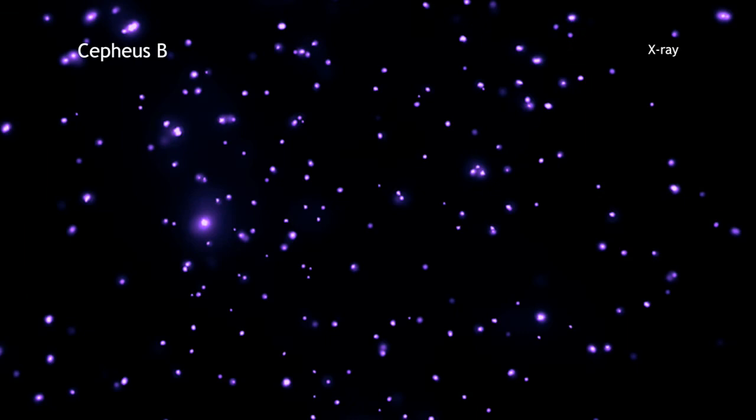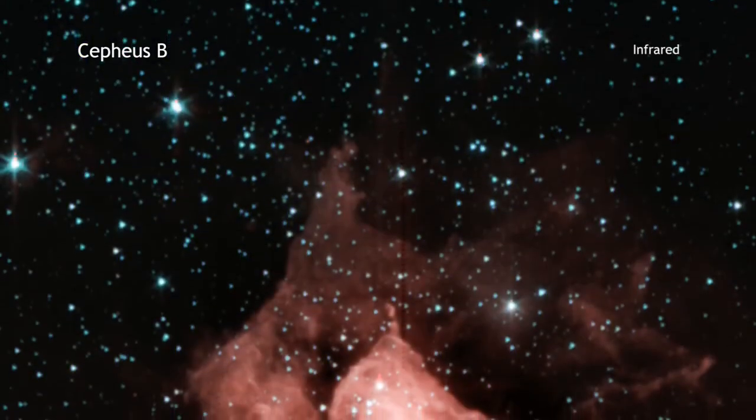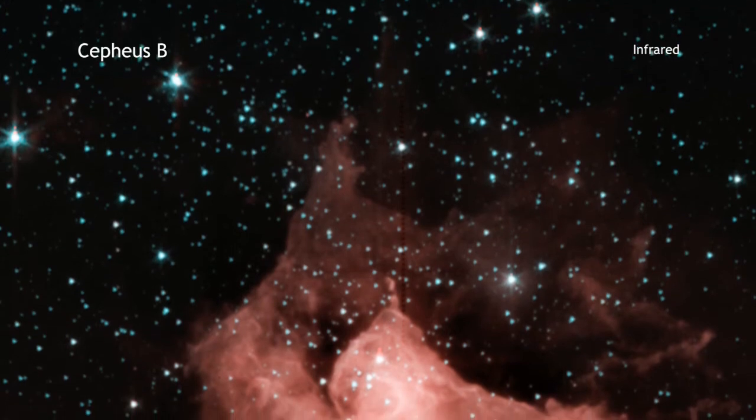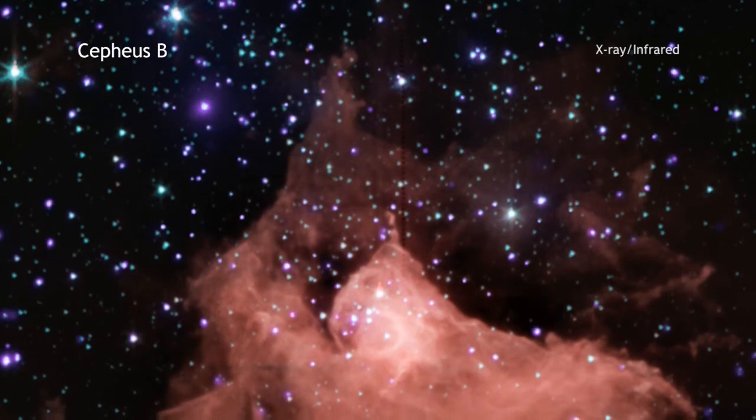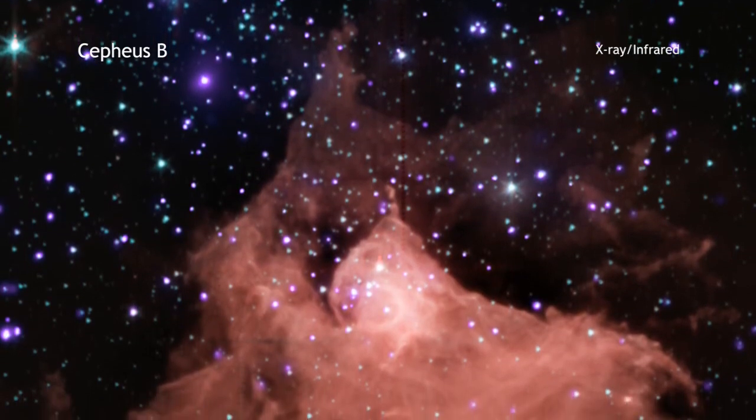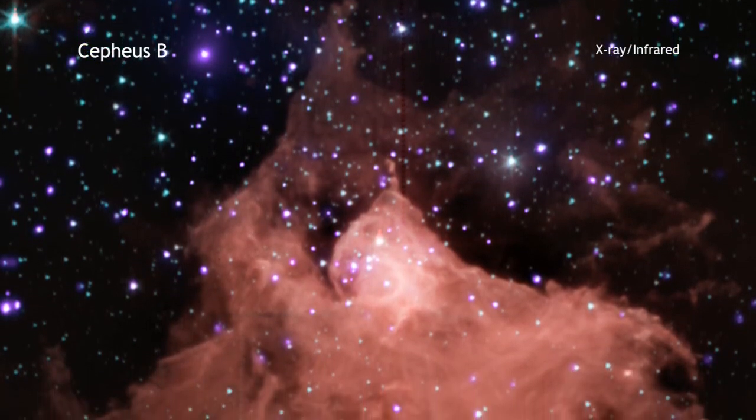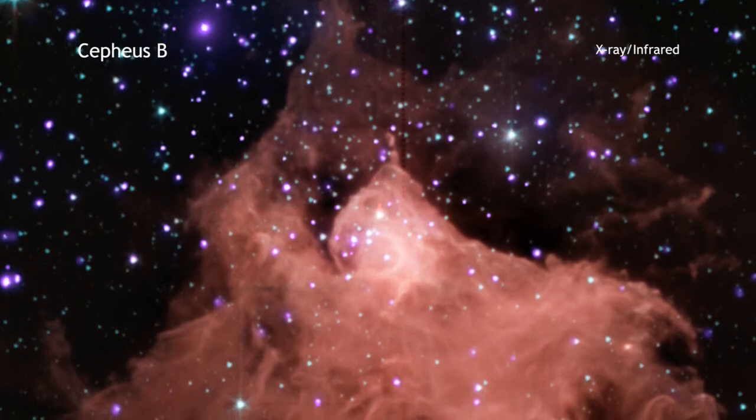X-rays seen by Chandra show where the young stars in the cloud are, while infrared emission observed by Spitzer reveals whether these stars contain planet-forming disks around them. Taken together, these data reveal that radiation from massive stars is triggering a new generation of stars to be born.